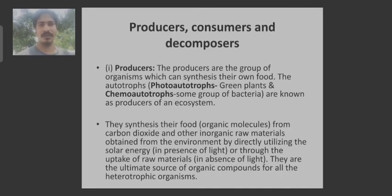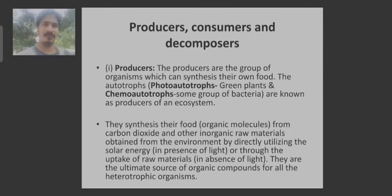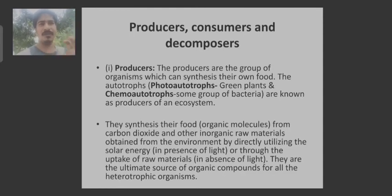No light is required for chemo-autotrophs. So producers comprise photo-autotrophs as well as chemo-autotrophs. Simply put, producers are those organisms which prepare their own food. Examples are green plants and certain bacteria.